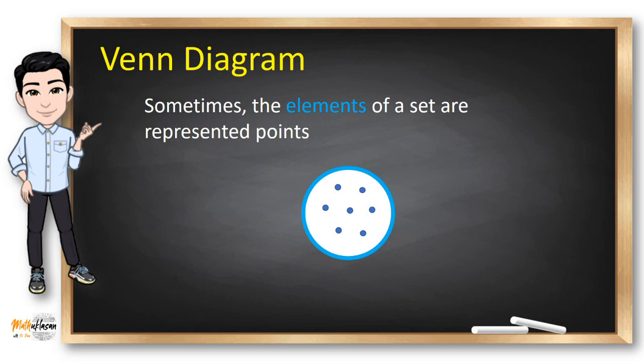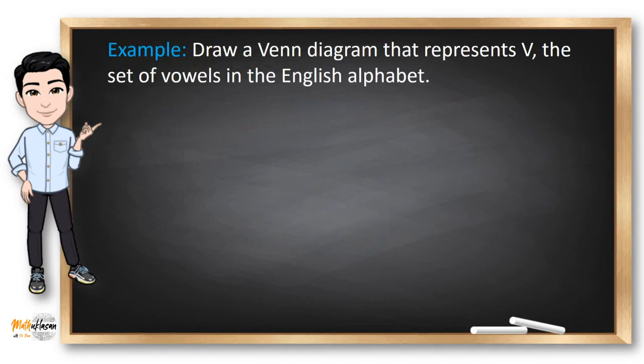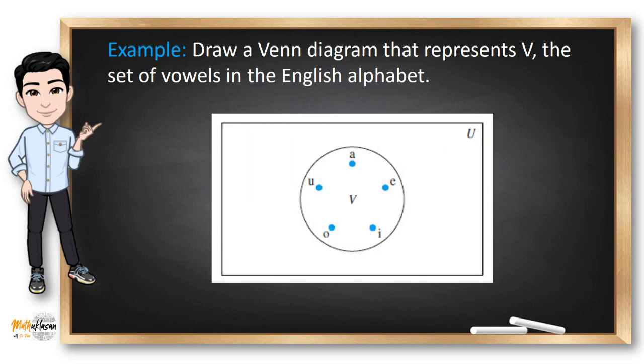Venn diagrams are often used to indicate the relationships between sets. For example, draw a Venn diagram that represents V, the set of vowels in the English alphabet. The first thing you need to do is draw a rectangle and draw a circle inside labeled as V. Inside the set are the elements A, E, I, O, U, which represents the set of vowels in the English alphabet.